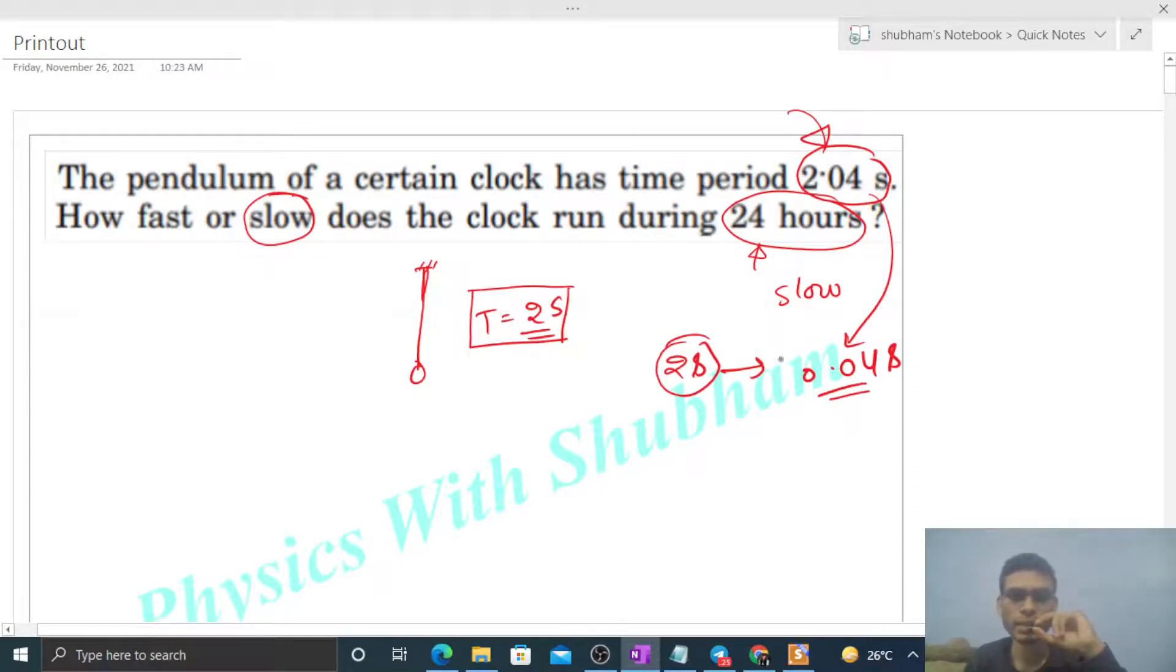So in 1 second, how much will it go behind? 0.02 seconds. So in 24 hours, how much time will it go behind? 24 hours means 24 times 60 times 60 seconds. So in that many seconds, it will go behind by 0.02 times 24 times 60 times 60.